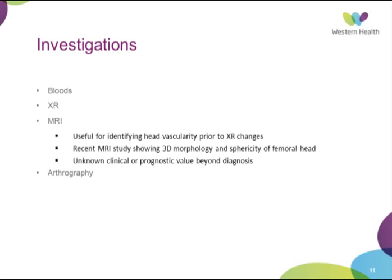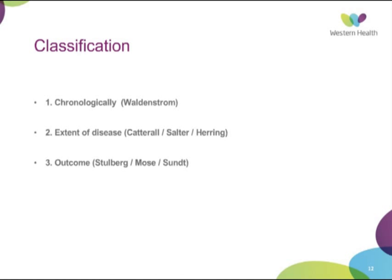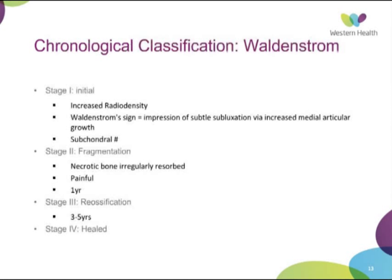Planning for the exam, the major bulk of Perthes knowledge relates to classifications and prognosis. The treatment is very controversial and unlikely to be tested extensively. The classification systems used include Waldenstrom, which is chronological; Catterall, Salter-Thompson, and Herring, which describe extent of disease and give some idea of natural history; and the Stulberg criteria, which is the most commonly used for outcomes and guiding natural history.